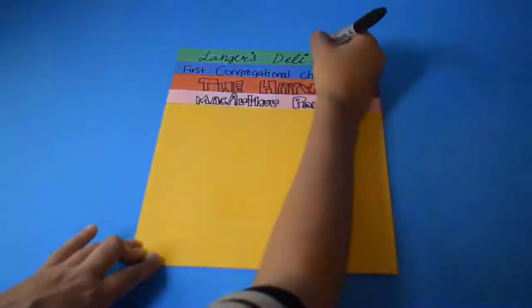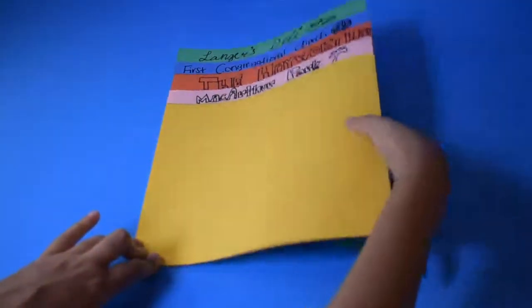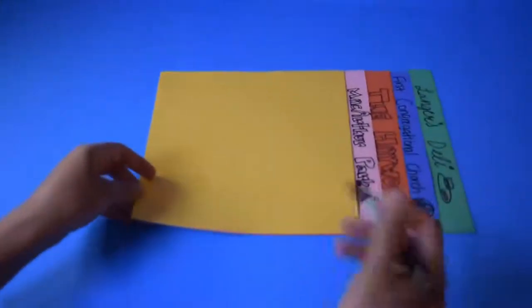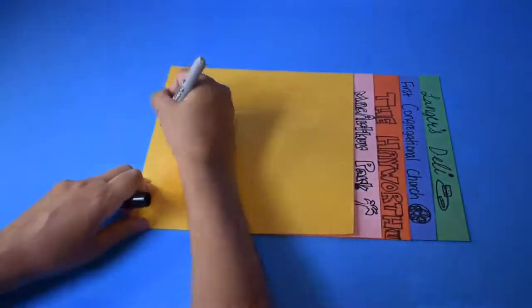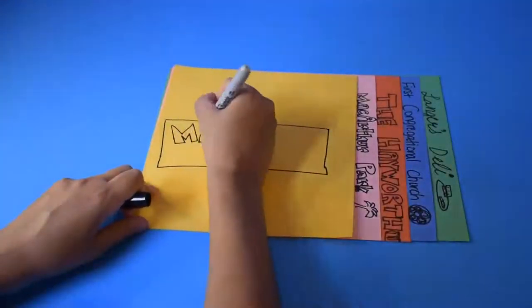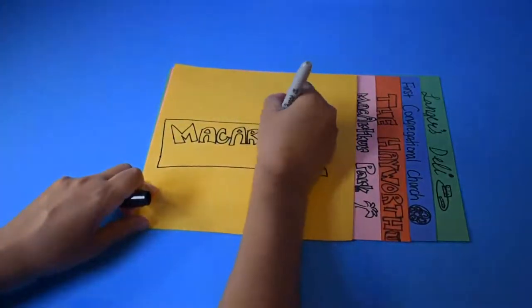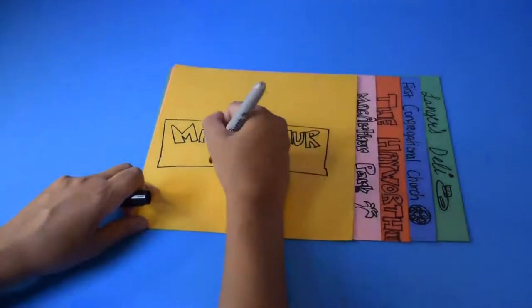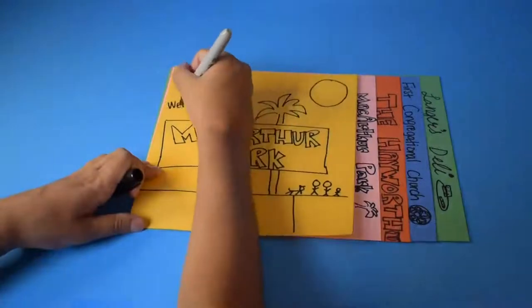I challenge you to include places that are 50 years or older. Think about and research by walking outside or learning online. On the cover page, write the name where you live. This is the name of your neighborhood or city.